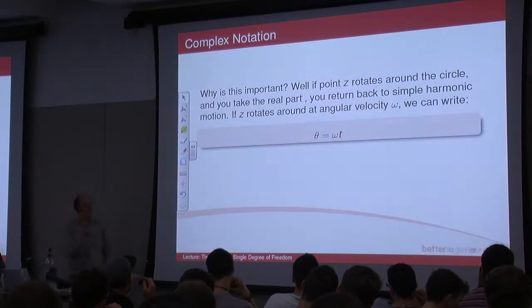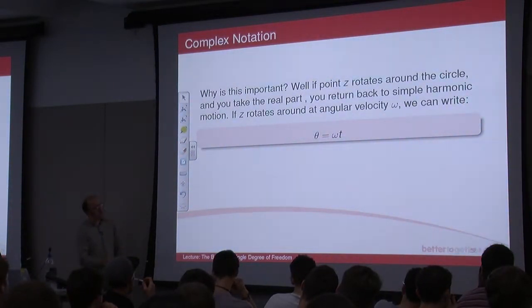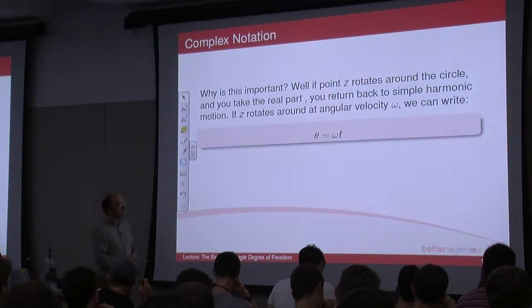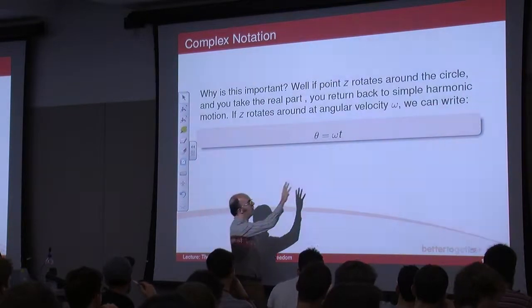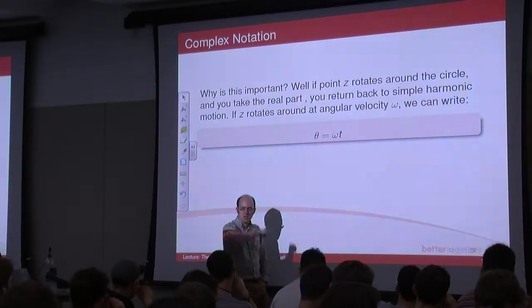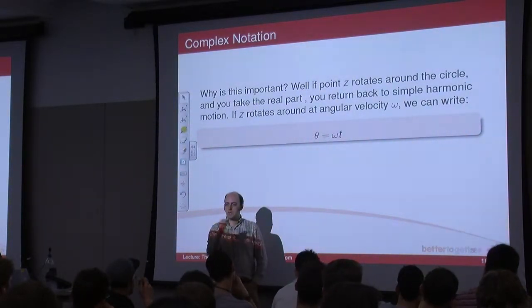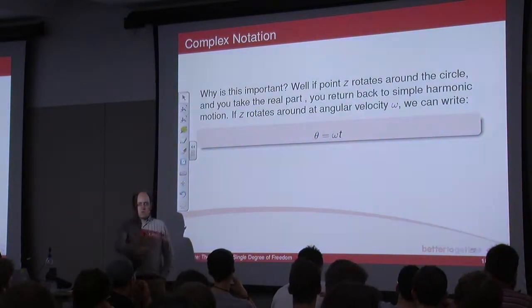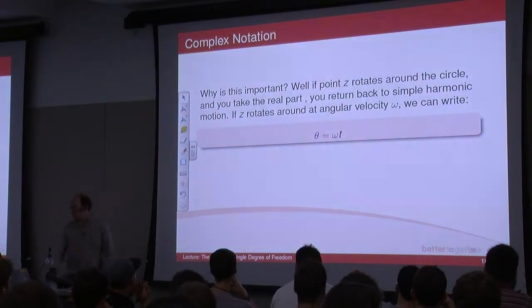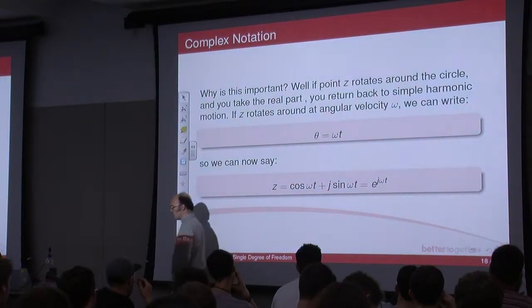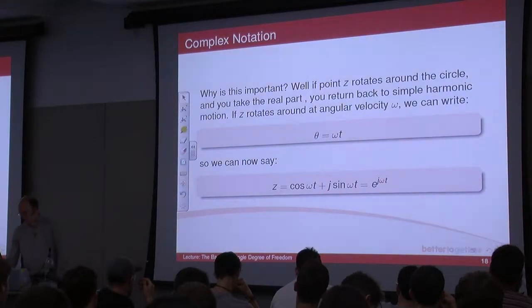So why is it important? Like I said, if Z rotates around that circle, and you take the real part, you return to a simple harmonic motion. And if we define that angular velocity as omega, omega t, let's disregard whether there's a zero there or not, we're not talking about natural frequency, we're talking about the angular velocity, and obviously, if you multiply the velocity by time, you get a distance, so omega times by t equals theta. So we can replace theta, therefore, in that equation with omega t. You end up with Z, which is cosine omega t plus j sine omega t, which is e to the j omega t.